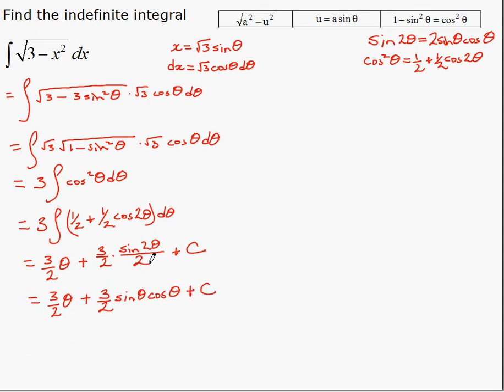So again, that part here. The 2 here cancels with this 2, because I'm replacing sine of 2 theta with this. 2's cancel. We're left with sine theta cosine theta. And that's there.